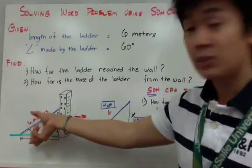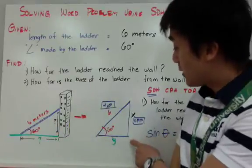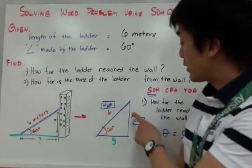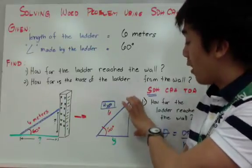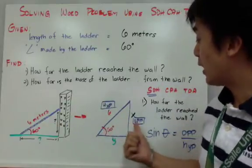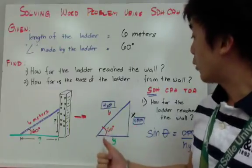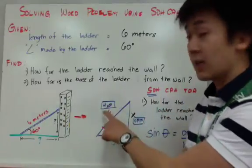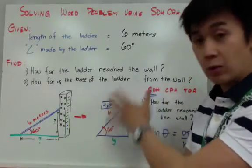Let's transpose our diagram into a right triangle. Since we're working on the first problem, we need to find the height of the wall against which the ladder leans. We are given the hypotenuse, which is 6 meters, and we are looking for x, which is the opposite side, given that the angle is 60 degrees.